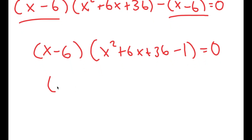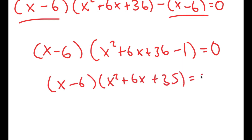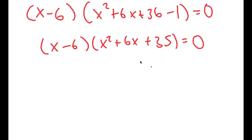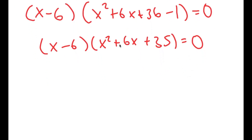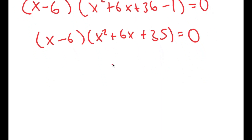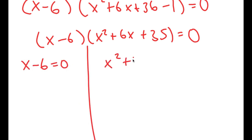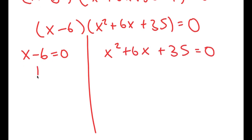So I get x minus 6 times x squared plus 6x plus 36 minus 1 is equal to 0. And this turns into x minus 6 times x squared plus 6x plus 35 is equal to 0. So now from here, I get two equations: x minus 6 is equal to 0, and x squared plus 6x plus 35 is equal to 0. For x minus 6 equals 0, I can add 6 on both sides, so I get x is equal to 6.